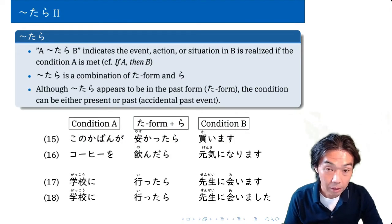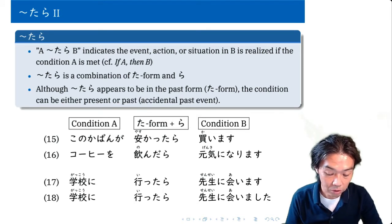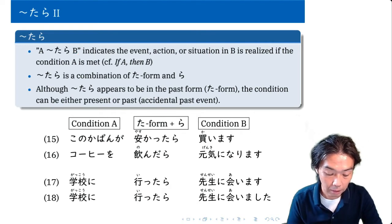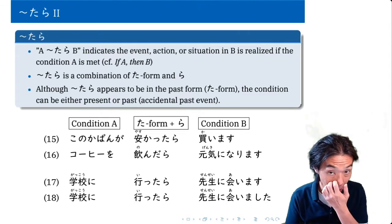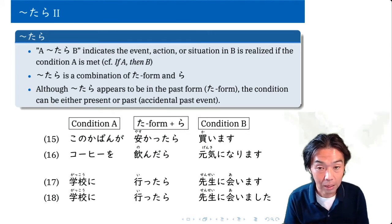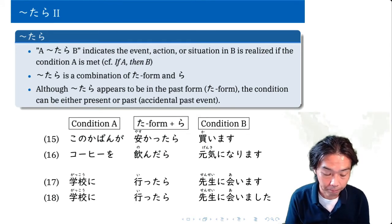So A Tara B means something like event, action or situation in B happens only if the first condition A is met. So if A happens, then B. Tara is actually the combination of the Ta form and Ra. So it's in a way very simple. Therefore, you always use Ta form, past plain form, plus Ra to create Tara.